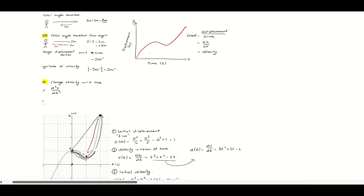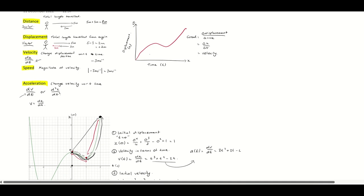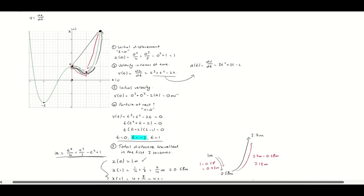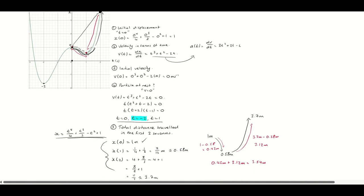In this video, we've looked at the application of derivatives — how to find velocity and acceleration from displacement-time graphs, and common question types: initial displacement (when t equals 0), velocity in terms of time, initial velocity (again t equals 0), particle at rest (velocity equals 0), and total distance travelled — the trickiest part, requiring identification of all critical points where velocity equals 0 within the time interval, and working out changes in displacement between those points.